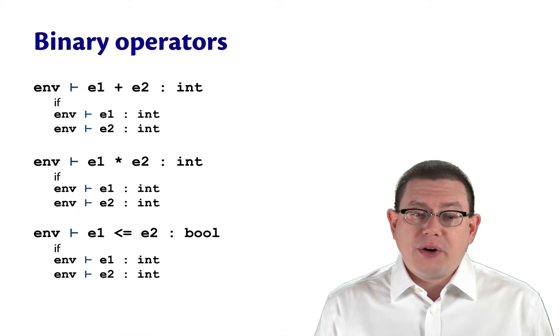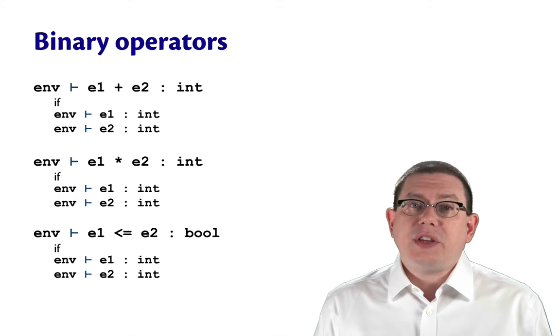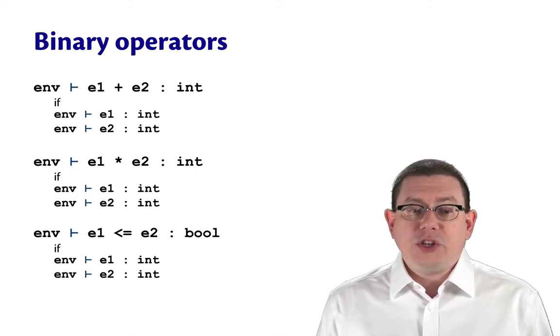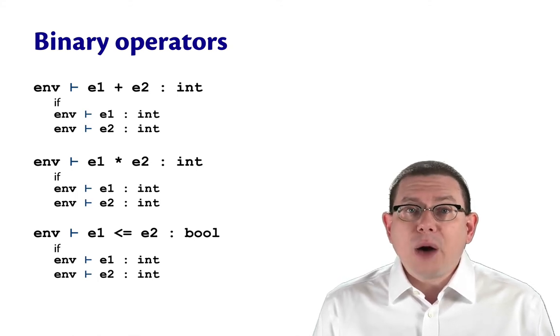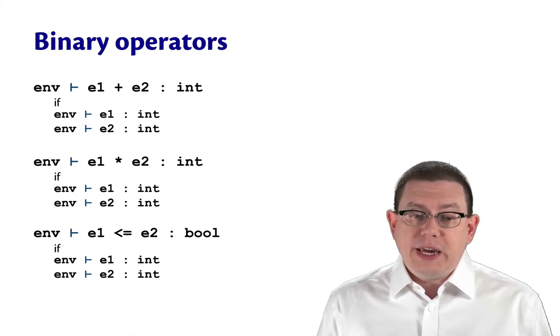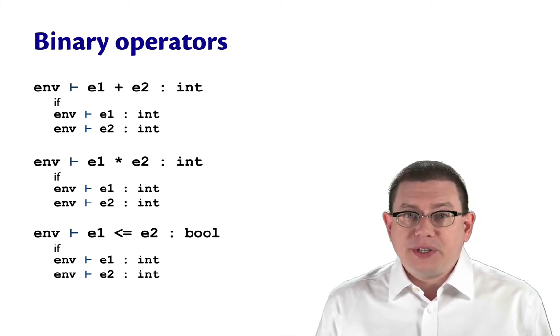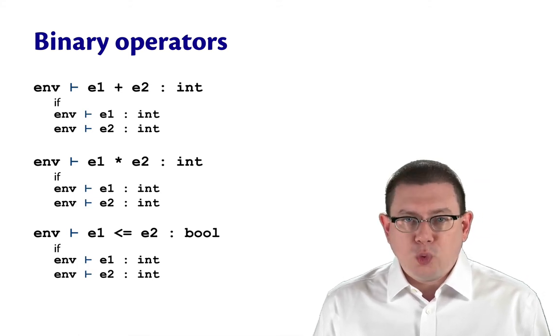Binary operators all look about the same. For each of them, we recurse into the sub-expressions e1 and e2, determine that each of those has type int in the static environment, and given that we're able to conclude for each of the binary operators that it has the appropriate type. So for plus and times, that's going to be int. For less than or equal to, it'll be bool.